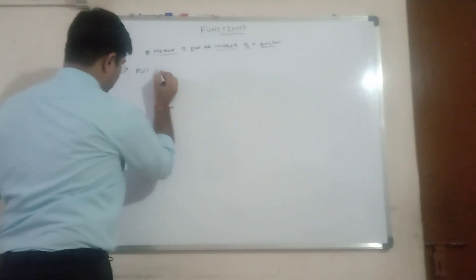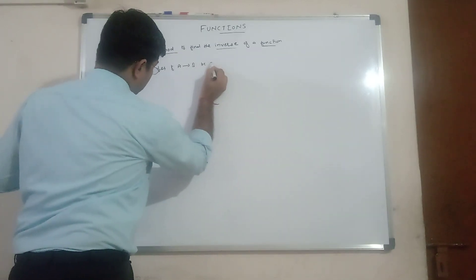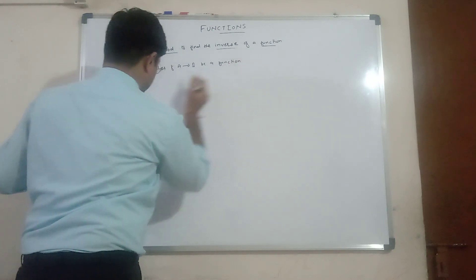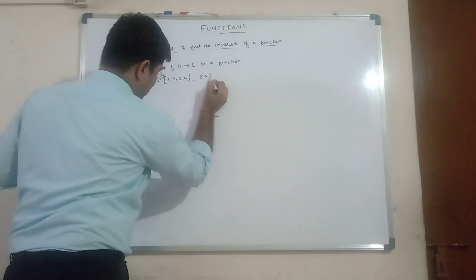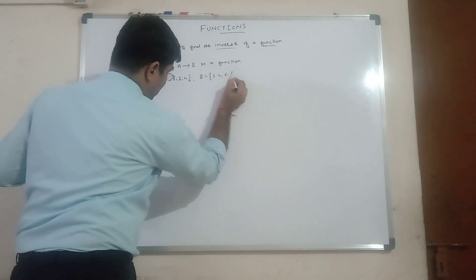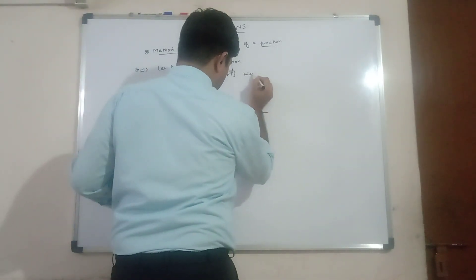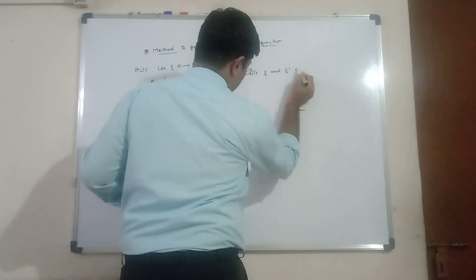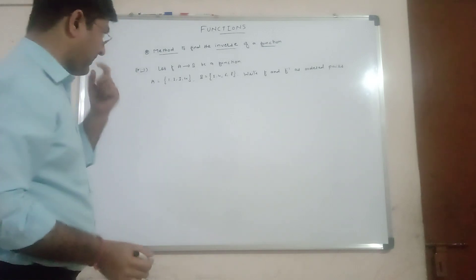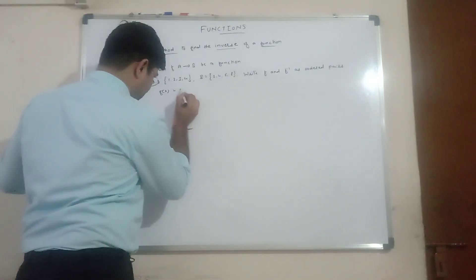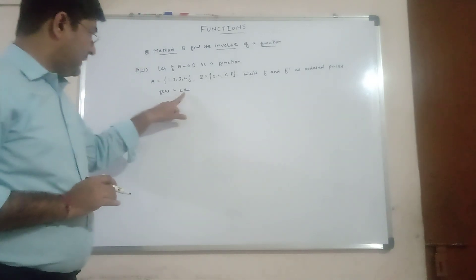Example number one: let f from A to B be a function, where set A contains elements {1, 2, 3, 4} and set B contains elements {2, 4, 6, 8}. We have to write f and f inverse in terms of ordered pairs. Function f is defined by the formula f(x) = 2x.